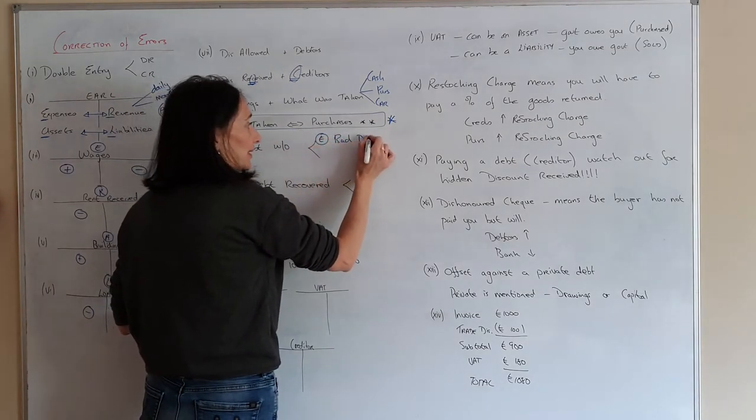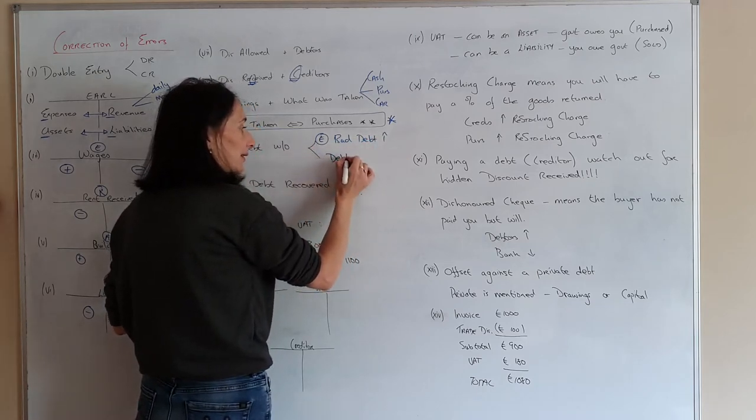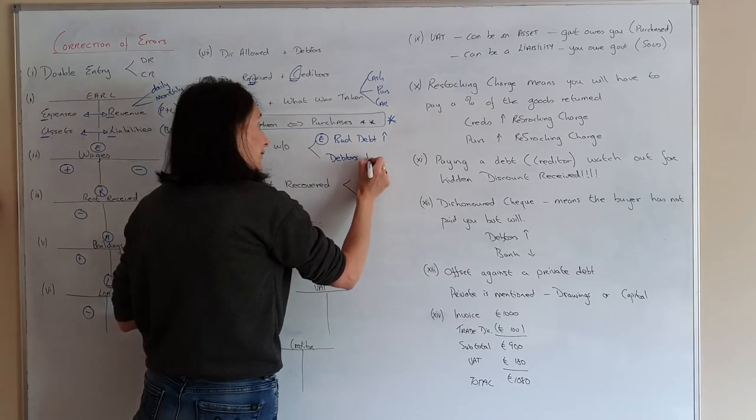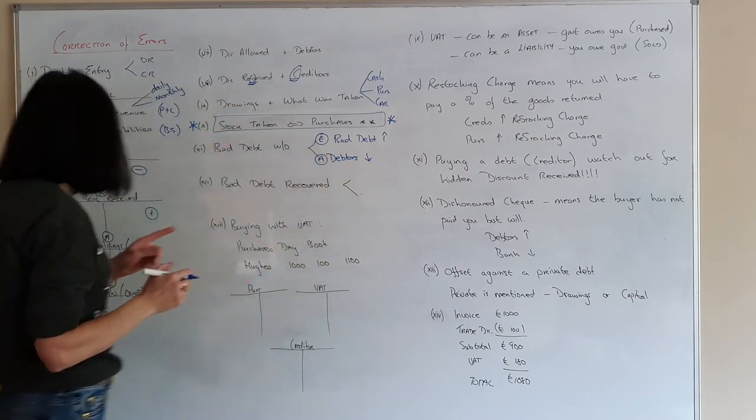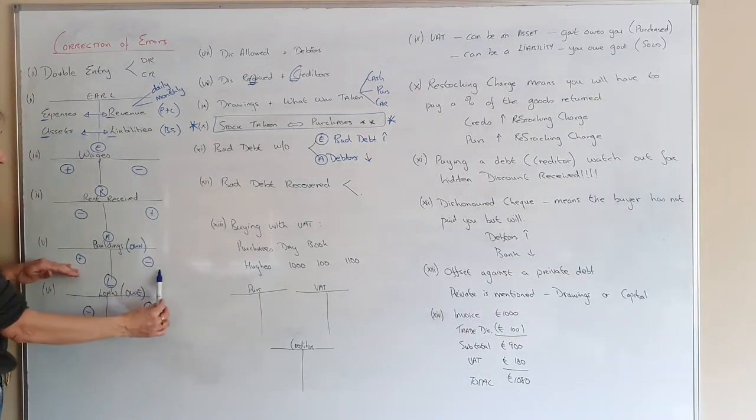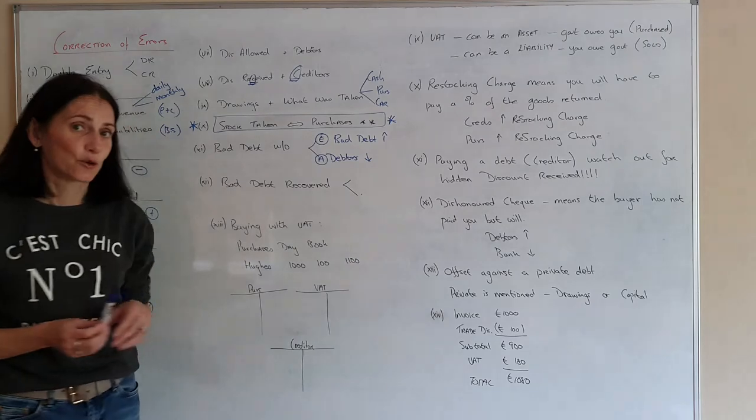We call this expense your bad debt has went up. It means that your debtors, you will never get that money off your debtors. So you have to reduce your debtors. Now debtors is an asset. Go back over here. Assets belong on this side if we're increasing them. And on this side if we're decreasing them. So we want to decrease our debtors. So that should be on the credit side.